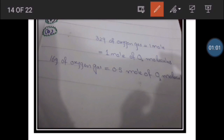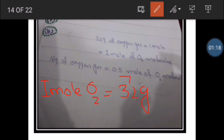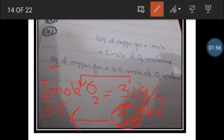What is given is that 32 grams of oxygen gas (O2) equals 1 mole. We know 1 mole of O2 = 32 grams. We need 16 grams, which is 32 divided by 2. So 16 grams of oxygen gas equals 0.5 moles of oxygen molecules. That is our answer.